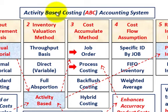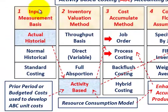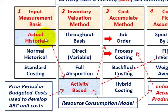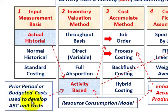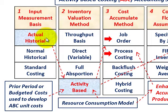What we're going to go over here is activity-based costing, or ABC costing, and how it fits into the five-part cost accounting system. For the first part — the input measurement basis — with activity-based costing you could use actual historical costing, or you could look at prior period costs or budgeted costs to develop the ABC unit costs.